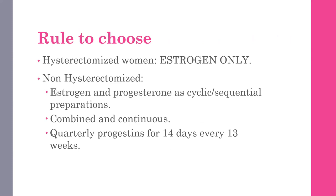The rule to choose treatment depends on two important factors. If the lady does not have a uterus — if she has had a hysterectomy — then estrogen only is the HRT to select. If the patient has a uterus, you have to give both estrogen and progesterone, either as cyclical sequential preparation or continuous combined form. Sometimes quarterly progestins for 14 days every 13 weeks would also work.